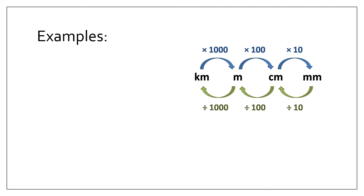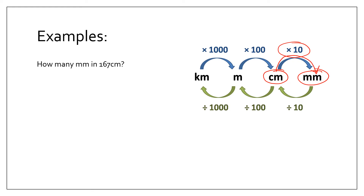Some examples. How many millimeters are in 167 centimeters? We're going from centimeters to millimeters, which means we're going to a smaller unit. So we take 167 centimeters, multiply it by 10, and that gives us 1670 millimeters.